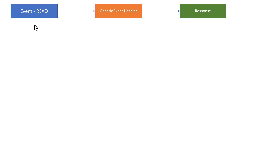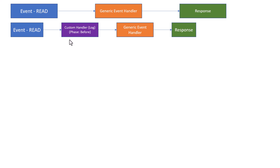In our case, we are going to have a read event handler. The SAP CAP framework has a generic event handler that can take care of this read for you — think of it as a managed scenario in the RAP world, where the framework takes care of it for you. Similarly in the CAP world, there is a generic event handler that will take care of the read and send the response back to the end user. But we can also have middleware functions — a before event handler that can log the request, then pass it on to the generic event handler, and then the response is sent to the end user.